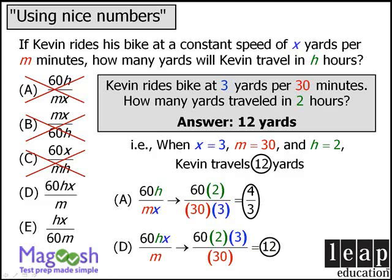Now, before we select D, we must first rule out answer choice E, since we may have chosen numbers that yield 12 for more than one answer choice. In which case, we would need to go back and select new values for x, m, and h.